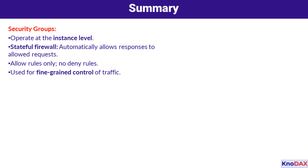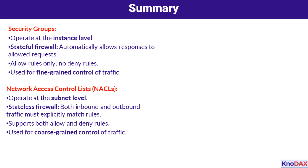Now let's go through the summary of AWS network security. Security is achieved through a combination of security groups and NACLs, each serving distinct purposes. Security groups operate at the instance level, acting as a stateful firewall — once a request is allowed, its response is automatically permitted. They only support allow rules and are ideal for fine-grained traffic control, helping secure individual resources like EC2 instances. NACLs function at the subnet level, providing an additional layer of security. Unlike security groups, NACLs are stateless — both inbound and outbound traffic must explicitly match a rule. They support both allow and deny rules and are excellent for defining coarse-grained traffic policies across subnets.